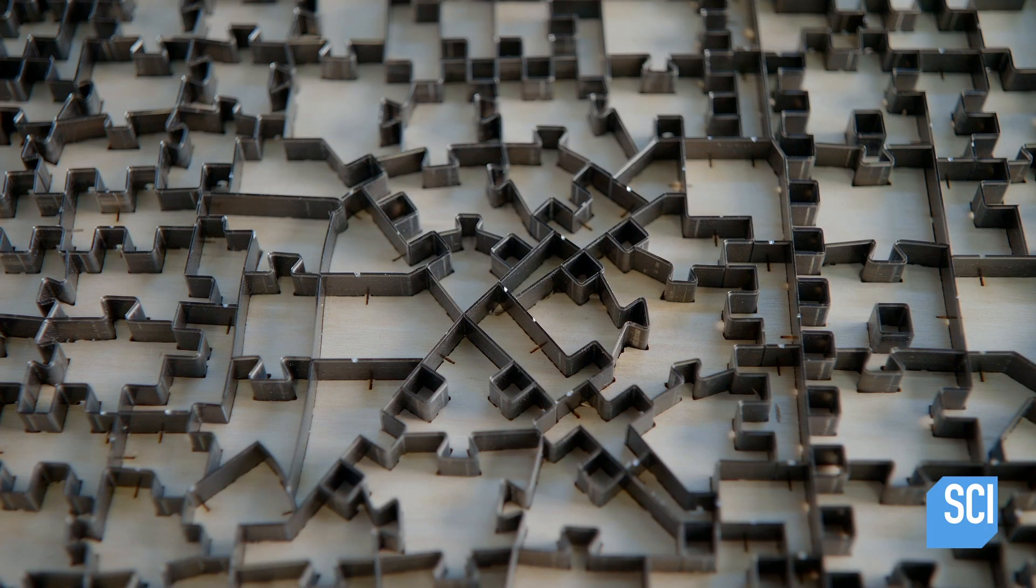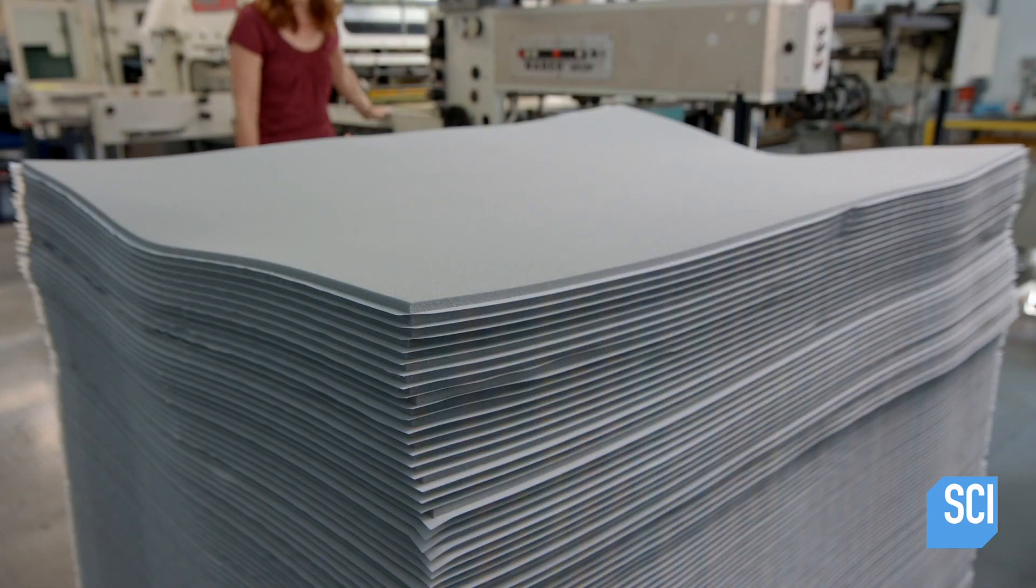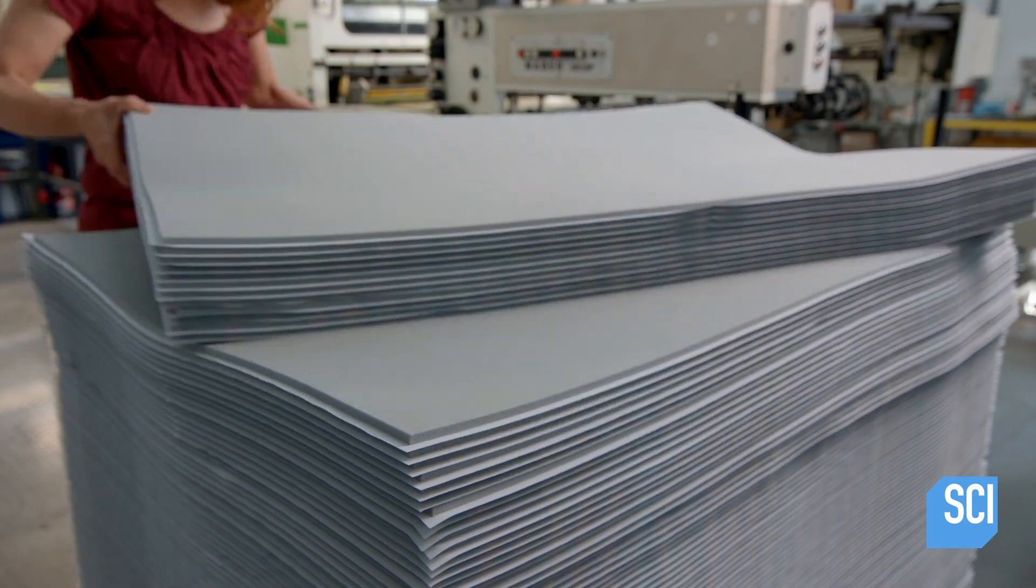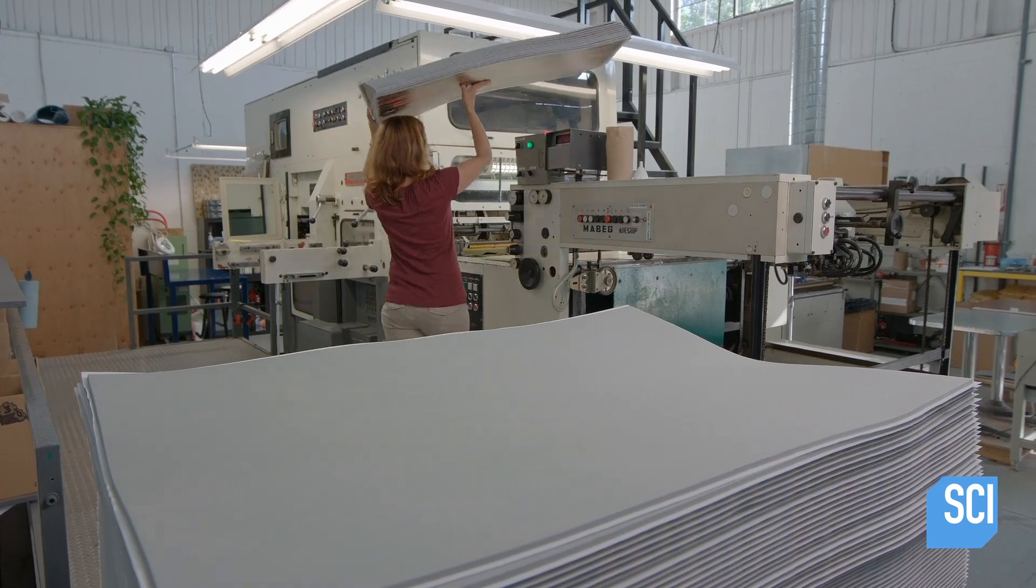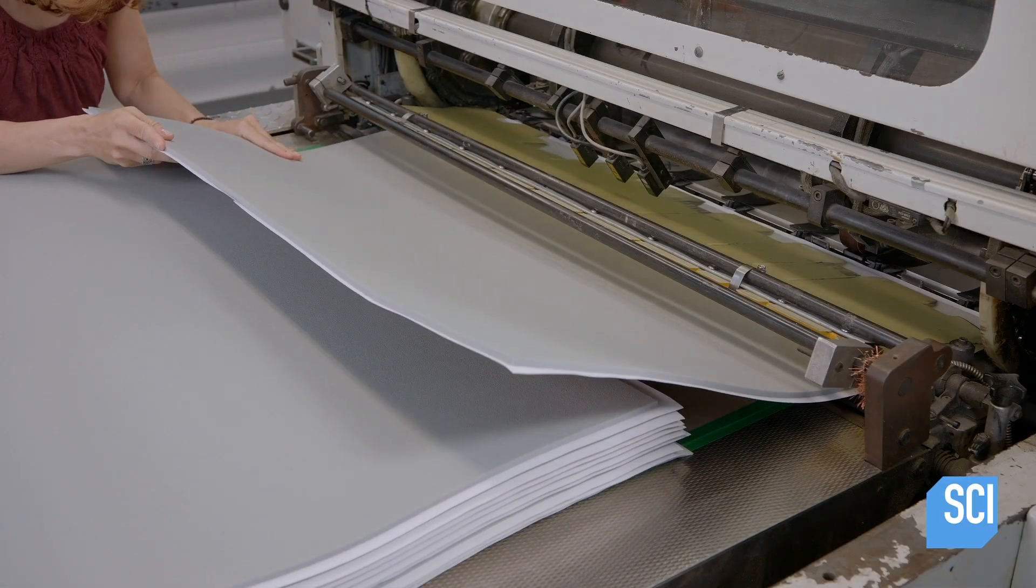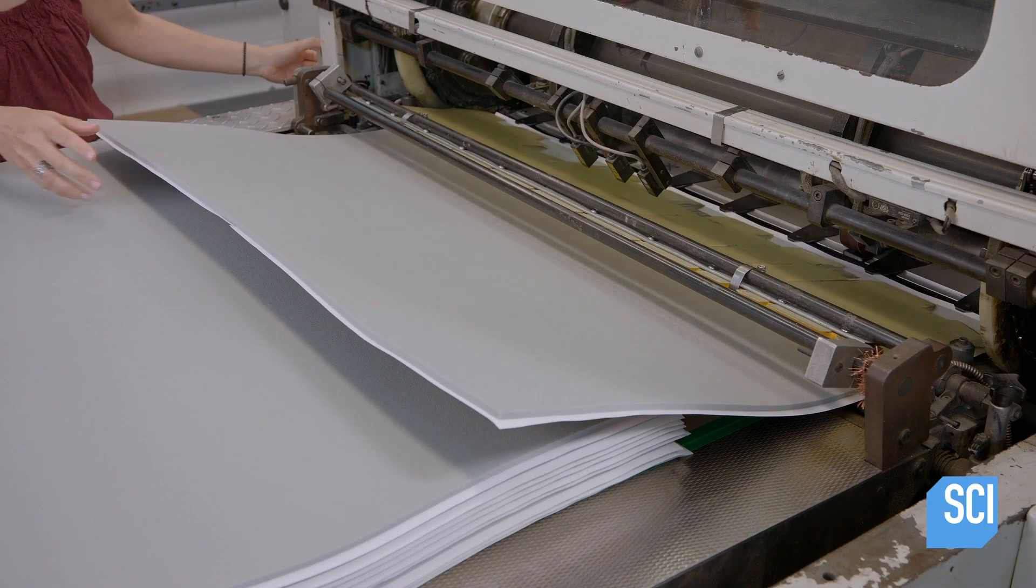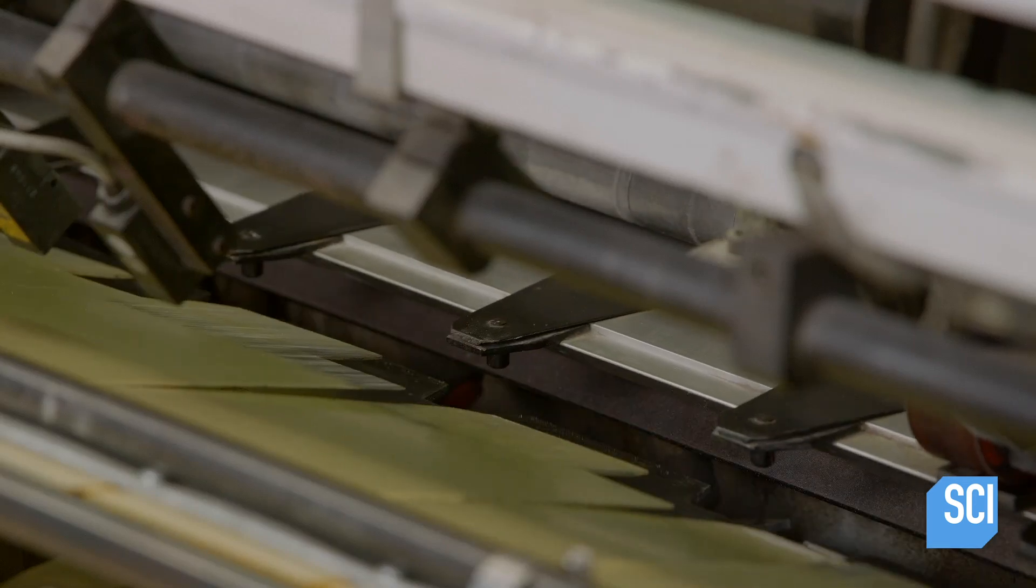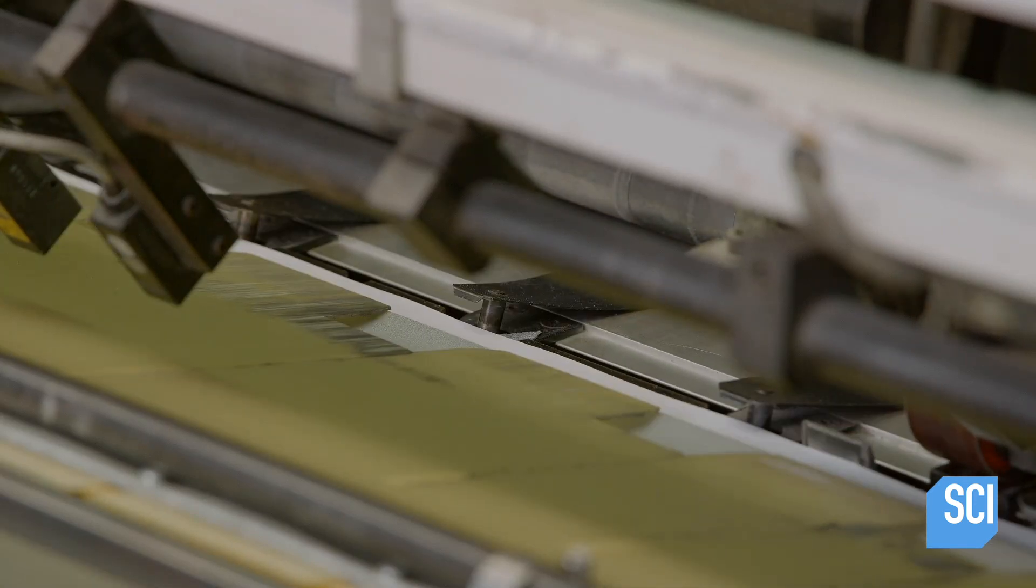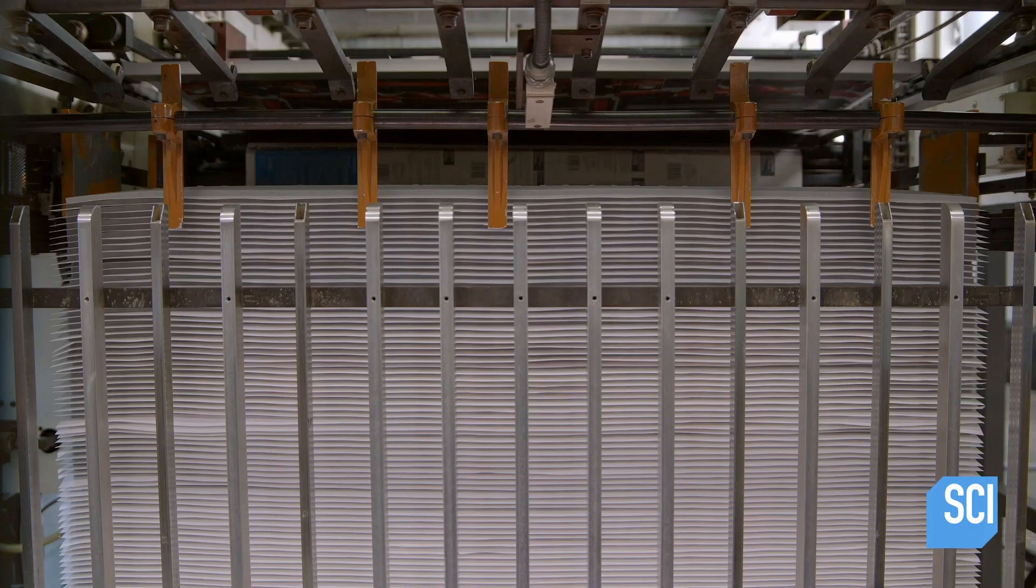The die is mounted inside the cutting machine. A technician feeds the machine one laminated foam sheet at a time, paper side down. Grippers grab the edge of the paper, pulling the sheet into the machine. The cutting die slices the puzzle pieces into the foam.